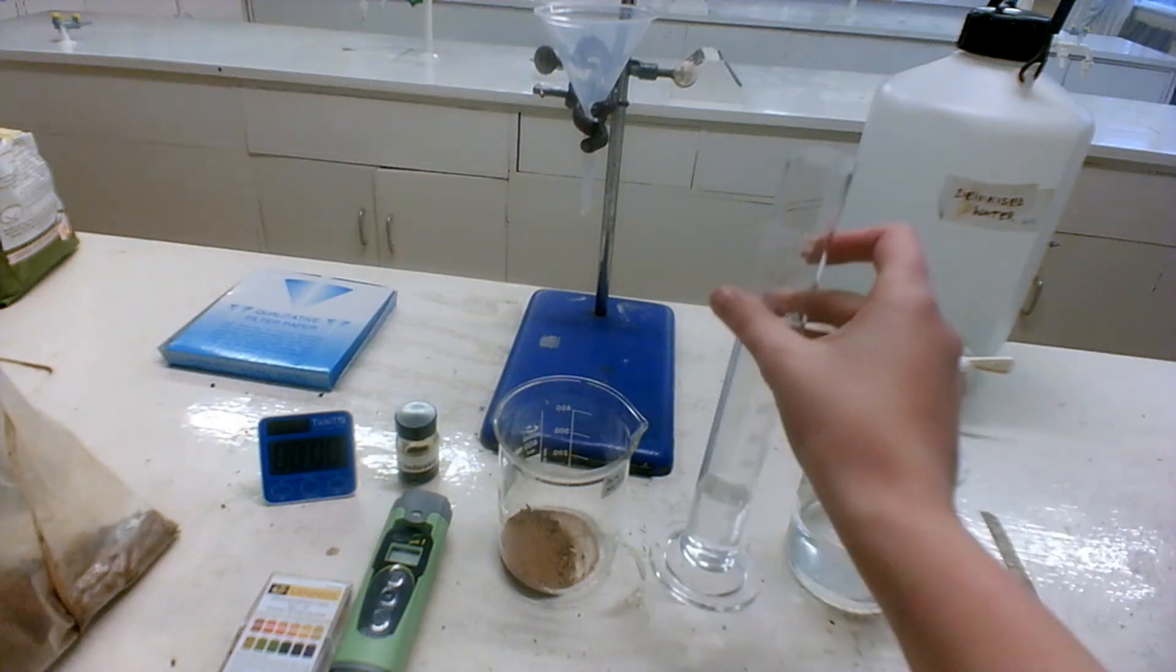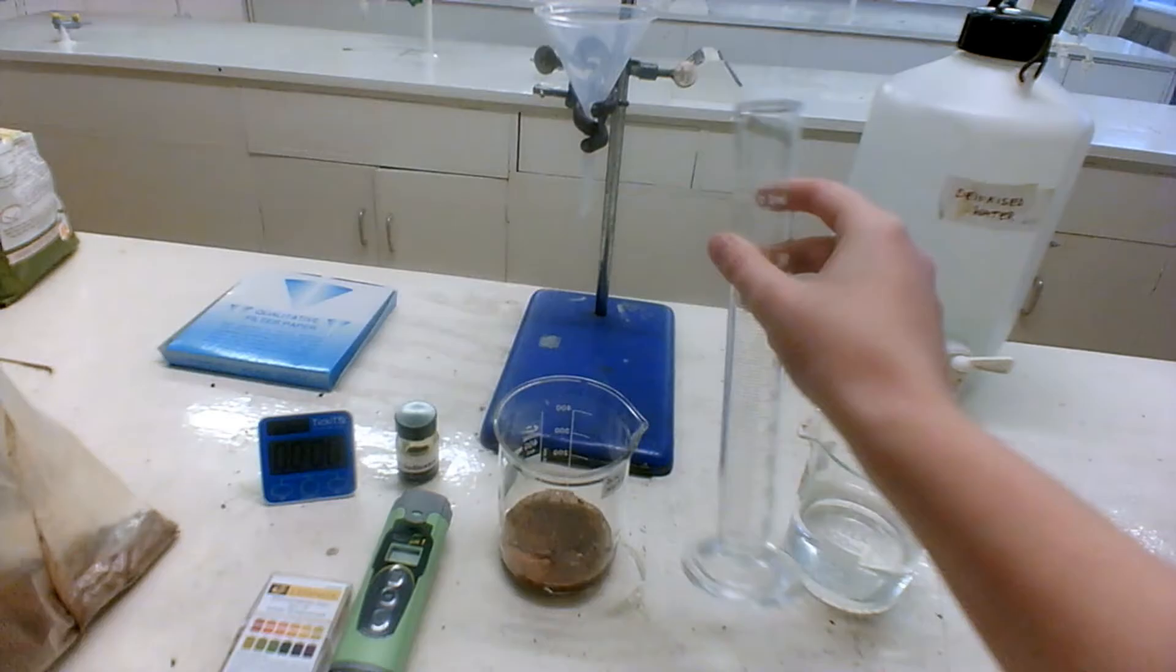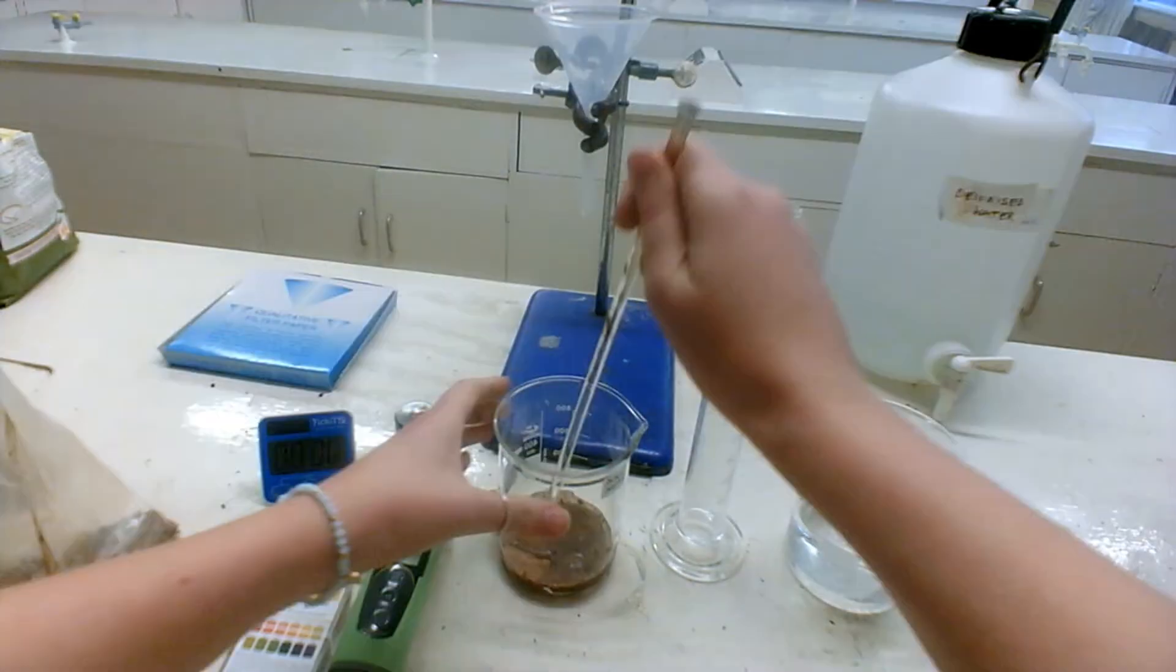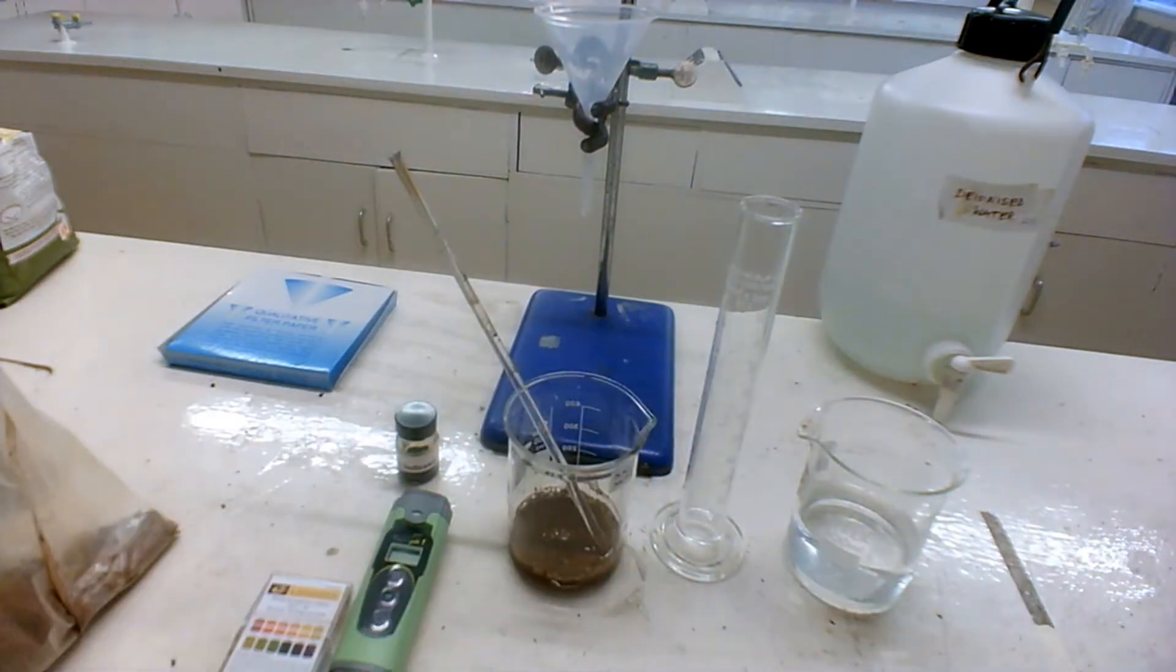So I'm going to add in my 25 ml of distilled water into my soil sample. I'm going to give it a stir. I'm going to leave this sit now for five minutes.